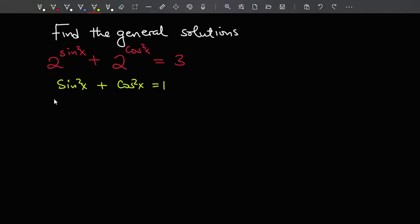So let me write this as 2 to the power sine squared x plus 2 to the power, now instead of cosine, I'm just going to say 1 minus sine squared x. I could also replace this with cosine and it would work just fine. So this equals 3.